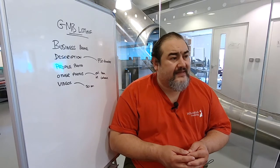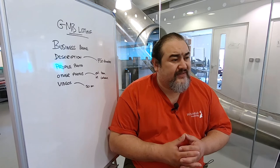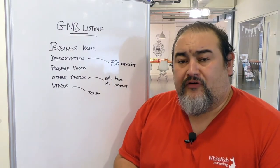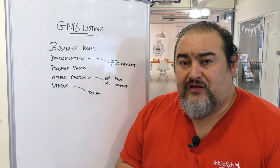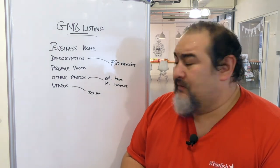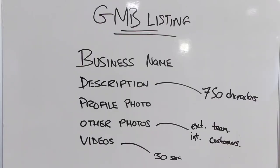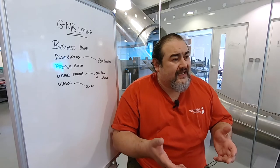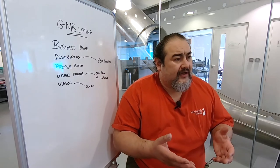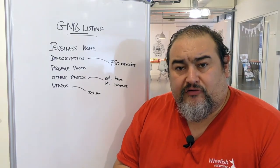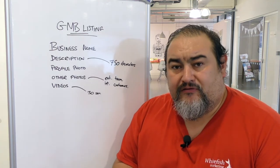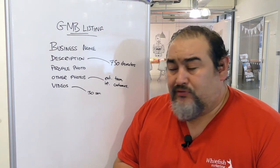For other photos, you're looking at about 750 by 750 pixels in size. You can upload a range of different types: external shots of your business, internal shots, photos of your team, happy photos of customers, and so on. There are lots of different things you can put up there in terms of photos.